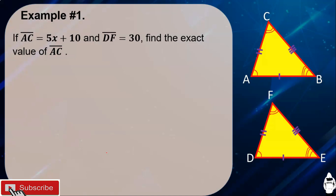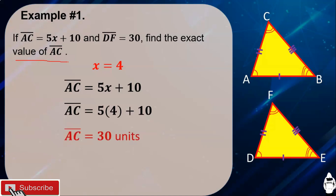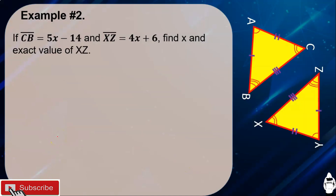Using the same figure and problem, we are going to find the exact value of AC. Since our value of X is 4, and segment AC is equal to 5X plus 10, substitute X equals 4. So segment AC equals 5 times 4 plus 10, which simplifies to 30 units.